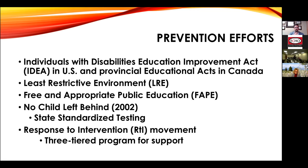Other prevention efforts include the Response to Intervention (RTI) movement, a three-tiered pyramid program developed around 2006-2008. If a child is struggling with reading, math, or writing, they first receive small group support in the classroom. If that doesn't help, they access the resource room. If still not improving, they receive individualized testing to identify a learning disability and then receive support through an IEP or 504 plan.